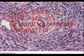Another important difference is that in ulcerative colitis only the mucosa is affected, while in Crohn's disease all layers of the intestinal wall are involved — what we call transmural involvement.